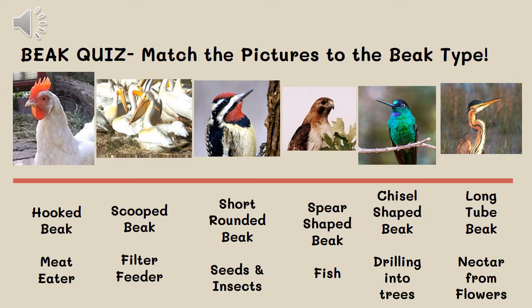Let's match some birds to their beak types. A chicken belongs with the short rounded beak. Pelicans have scooped beaks for scooping up water and filtering out fish. The yellow-bellied sapsucker is like a woodpecker — it drills into trees to get the sap or nectar. A hawk is a meat eater with a hooked beak. A hummingbird has a long tube beak. And lastly, a crane has a spear shaped beak for spearing fish.